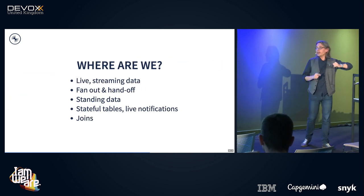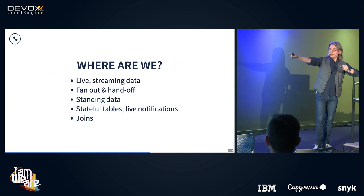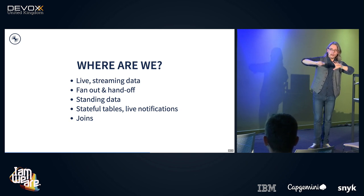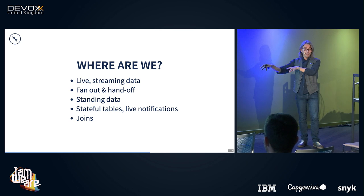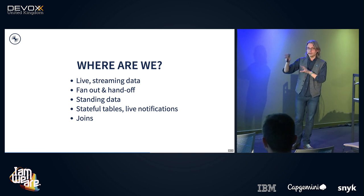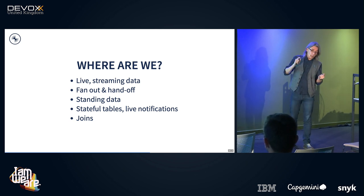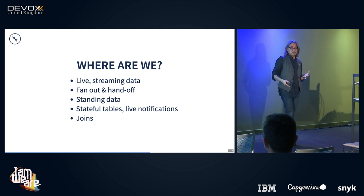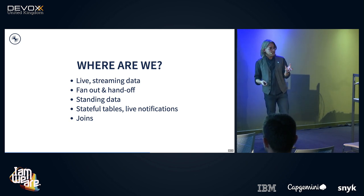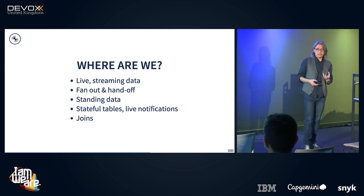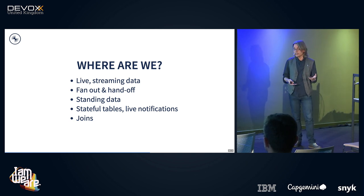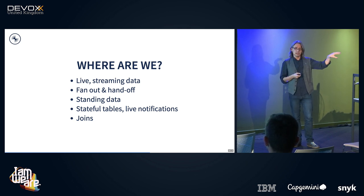Where does that put us? We have live streaming data, streaming in from a client, streaming back out to the world. We can fan it out for different processing, hand it off to other processes or different Java classes. We have a concept of standing data — we've turned a stream into a standing data table of locations. We have stateful tables, just like in a relational database, but those stateful tables are themselves live sources of streaming information. And we have joins.